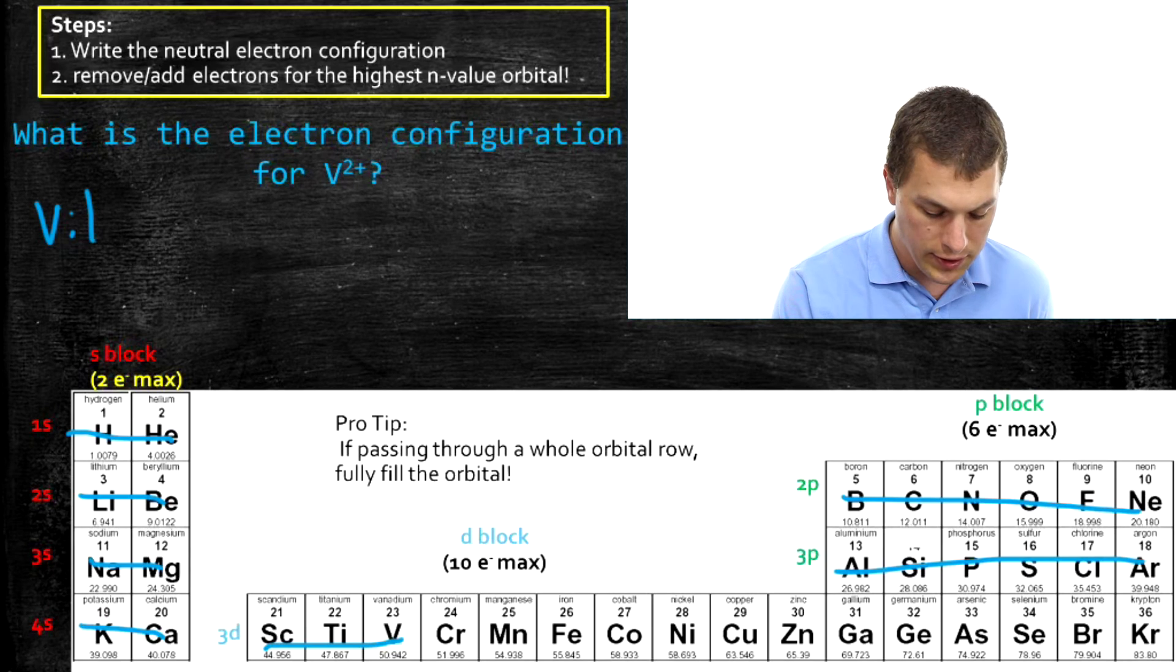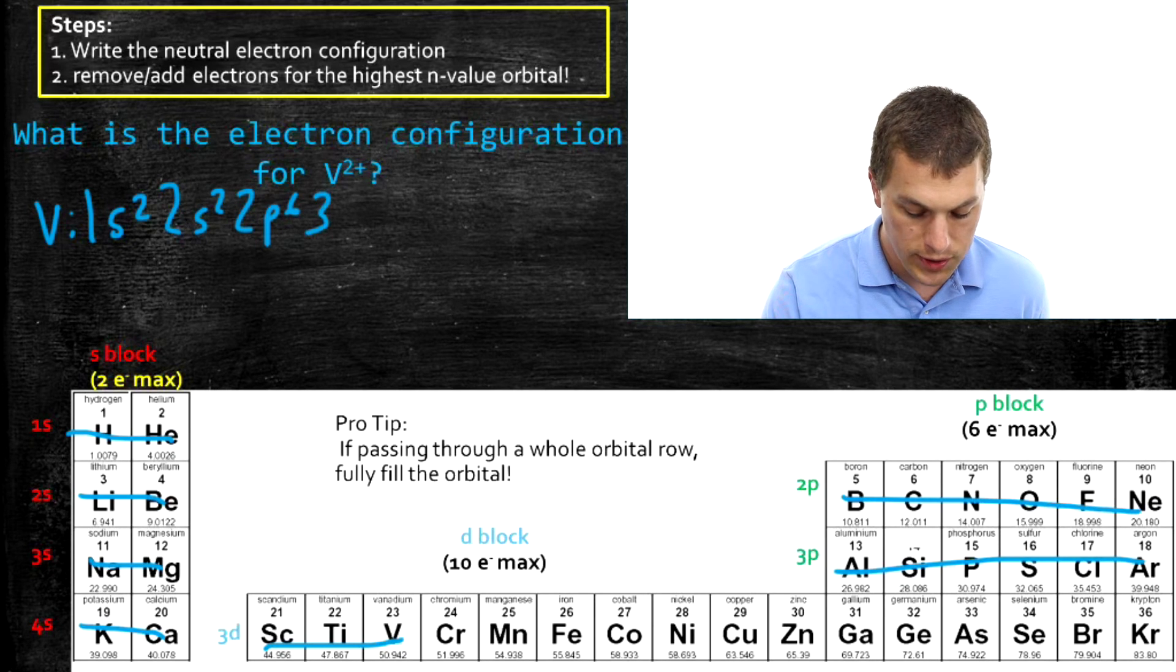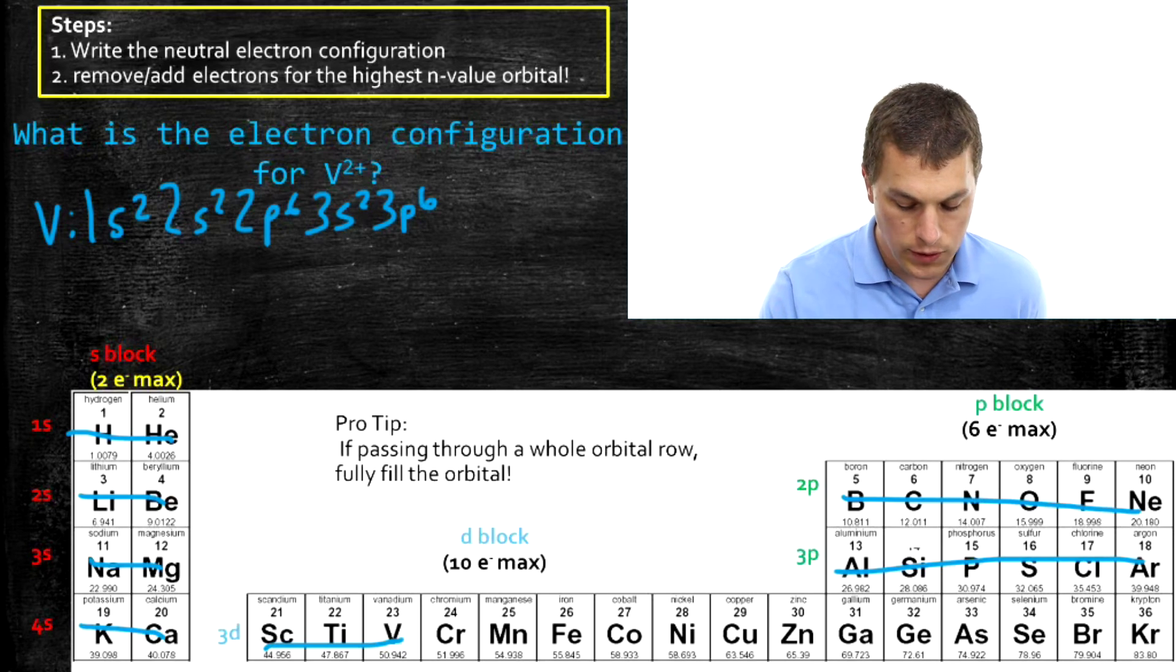And so what that means is our electron configuration is 1S2, 2S2, 2P6, and then we go into the 3S row, and then the 3P row, and that one's all the way full.